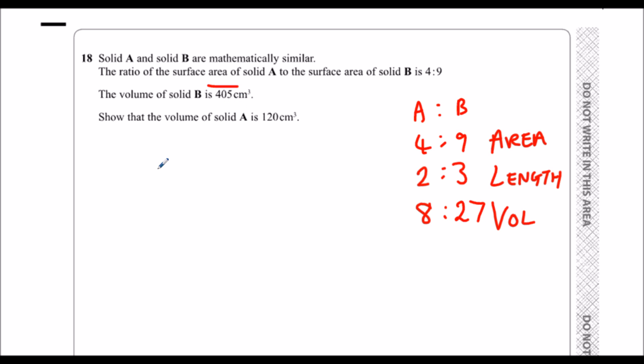The volume of B, so we've got 8 to 27, which is A to B. The volume of B is 405. Show that the volume of A is 120.